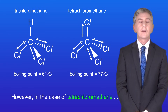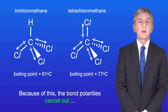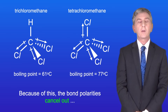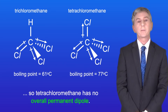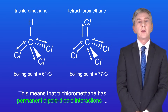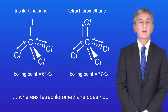However, in the case of tetrachloromethane, this molecule is completely symmetrical, and because of this the bond polarities cancel out, so tetrachloromethane has got no overall permanent dipole. This means that trichloromethane has permanent dipole-dipole interactions whereas tetrachloromethane does not.